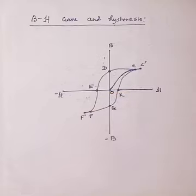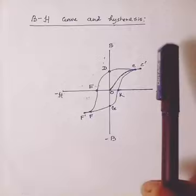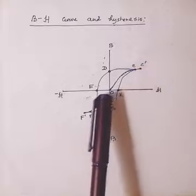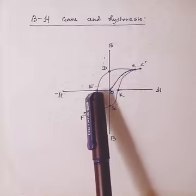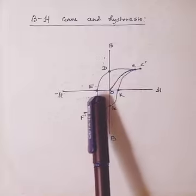So if H is now reversed then you can see B also further decreases and at E, B becomes zero.